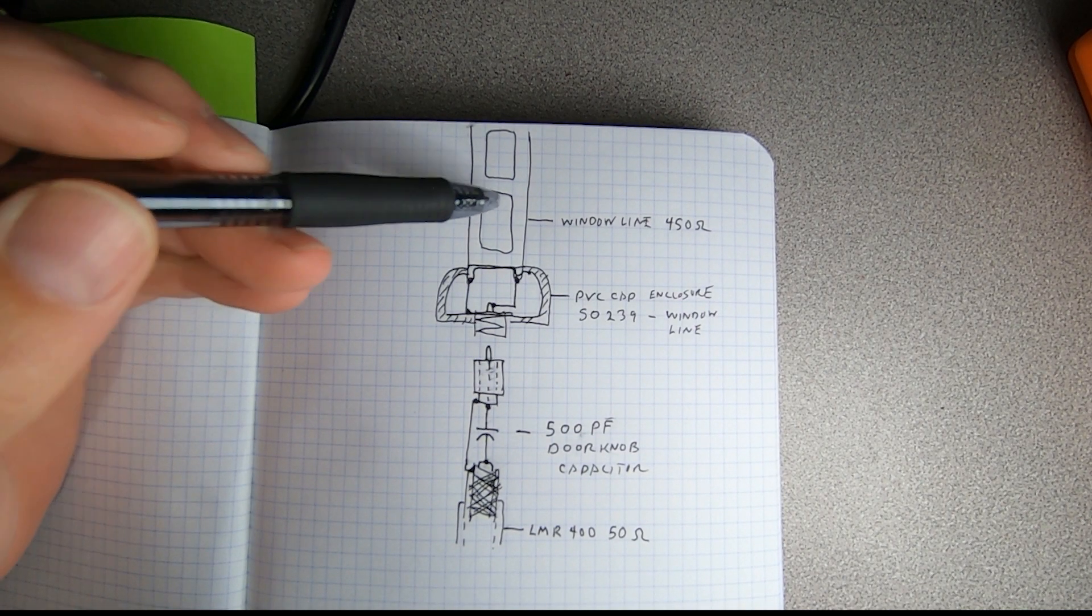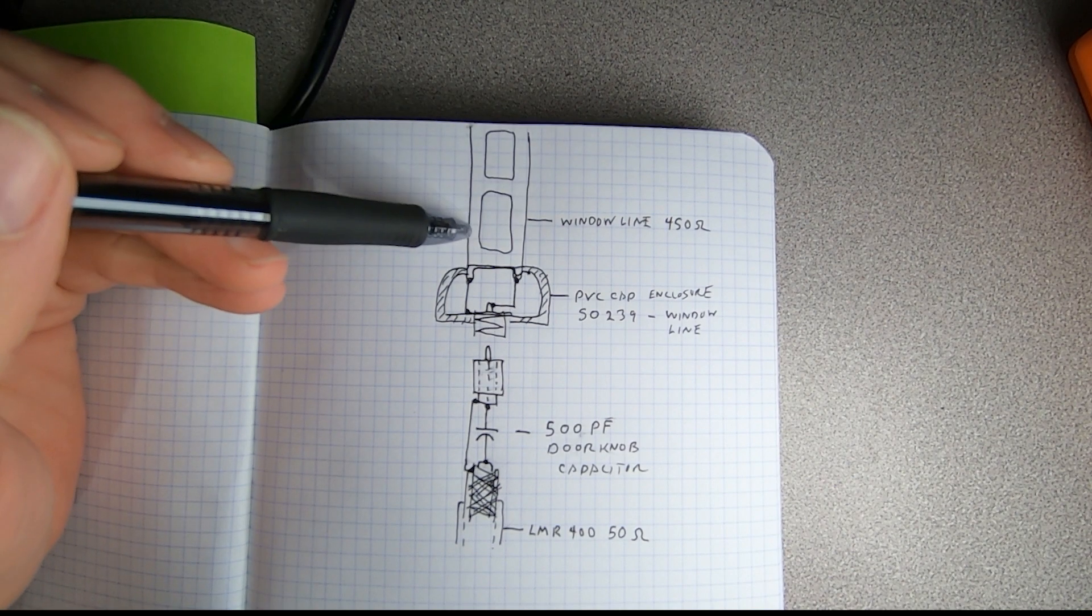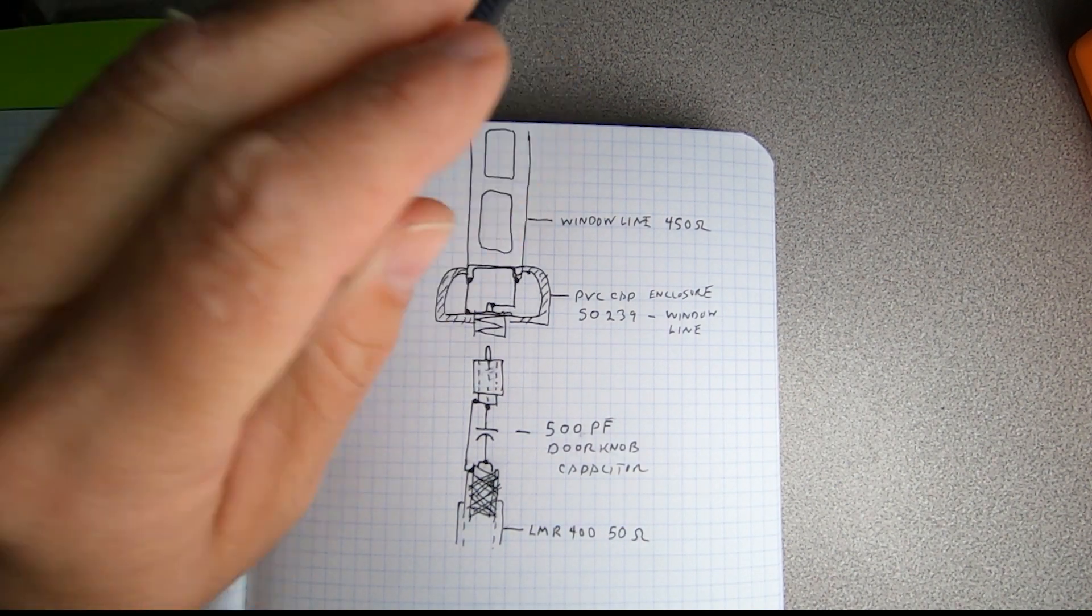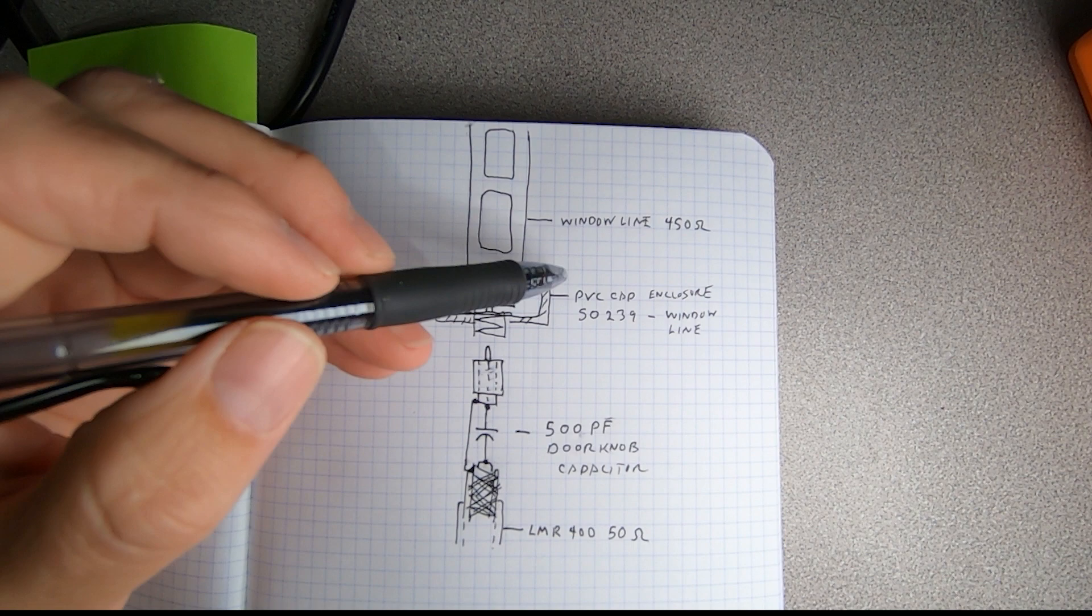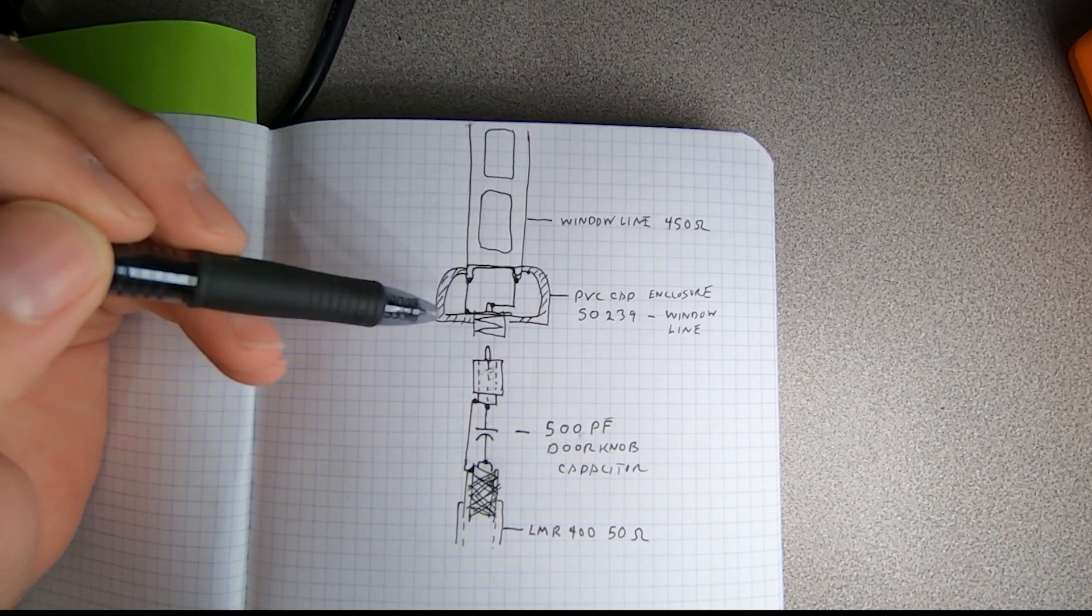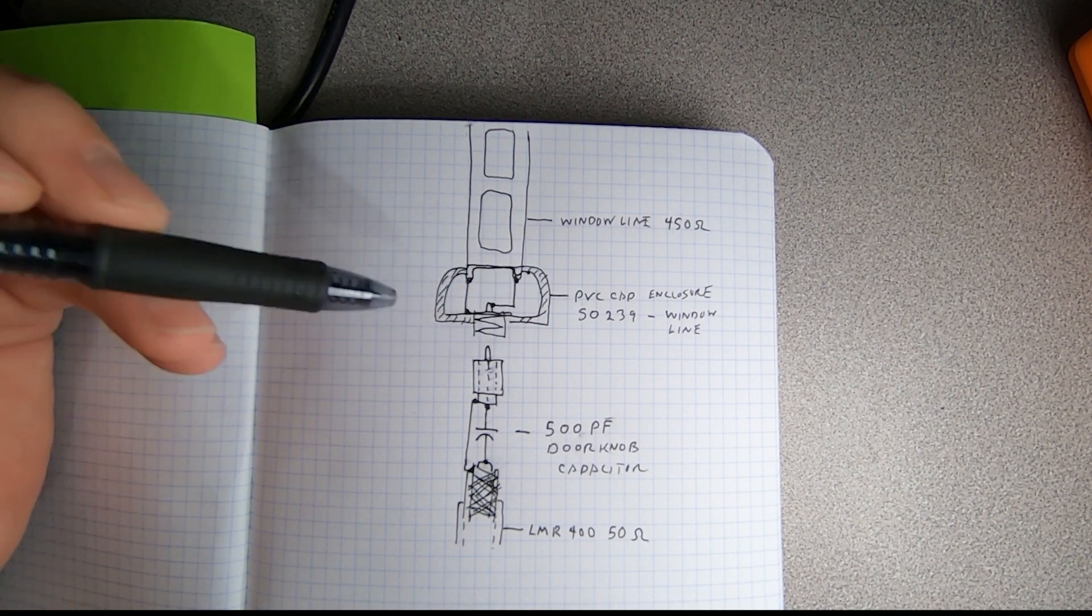Here's an overview of what we're doing. Here's our 450 ohm window line and this runs up to our element split off and I've eliminated the one-to-one balun on my ZS6BKW.